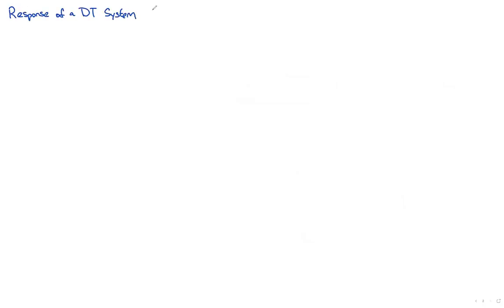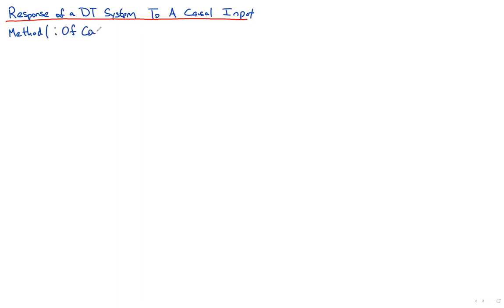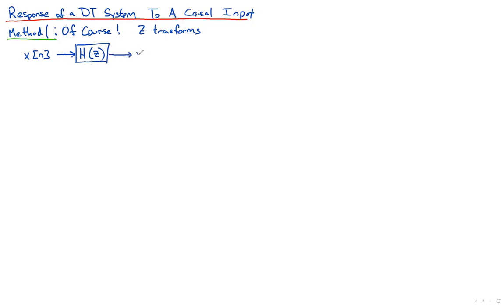The question is: can we figure out the response of a discrete-time system to a causal input? There are a couple of answers. The first is: of course — it's what we've been doing up until now. You use Z-transforms to figure it out. As an example, if you feed an input x[n] into an arbitrary discrete-time system drawn as H(z) — or H(e^{jω}) if you prefer the DTFT — you'll get some output.